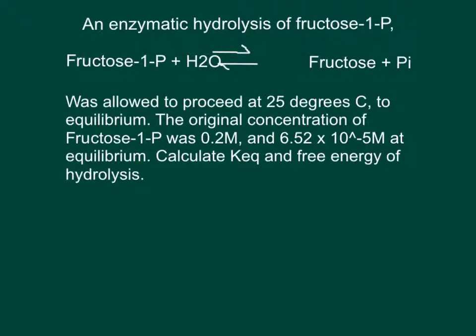was allowed to proceed at 25 degrees Celsius to equilibrium. The original concentration of fructose 1-phosphate was 0.2 molars and 6.52 times 10 to the negative 5th moles at equilibrium. Calculate the equilibrium constant and the free energy of hydrolysis.